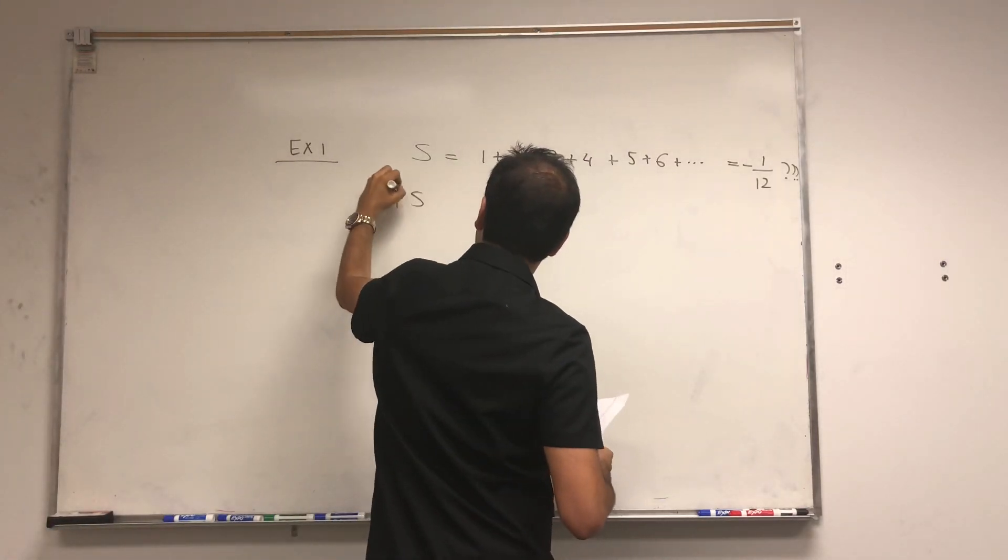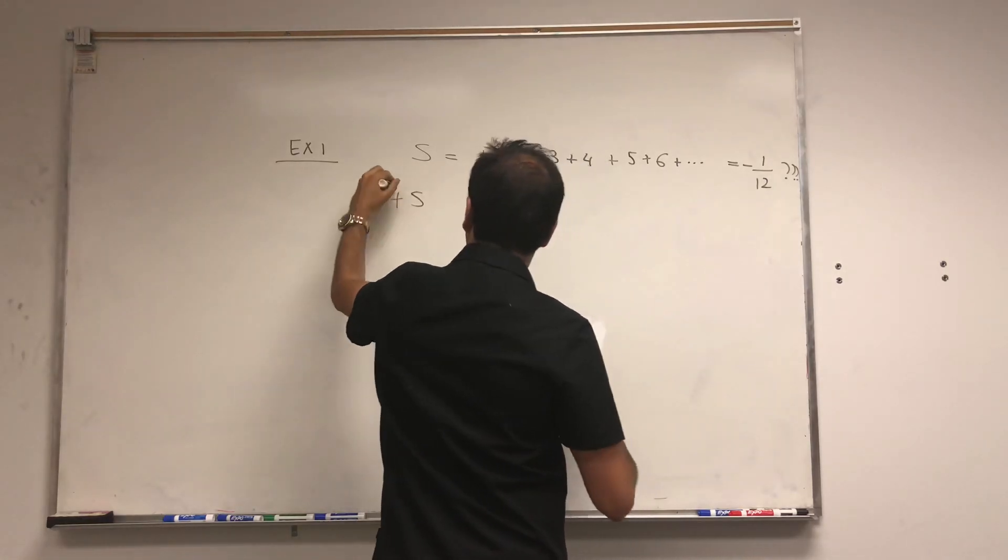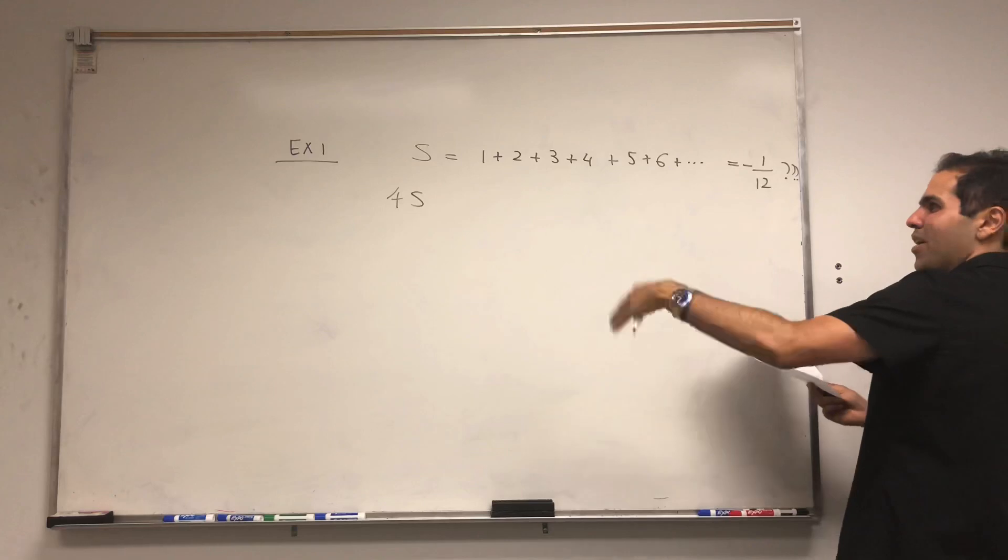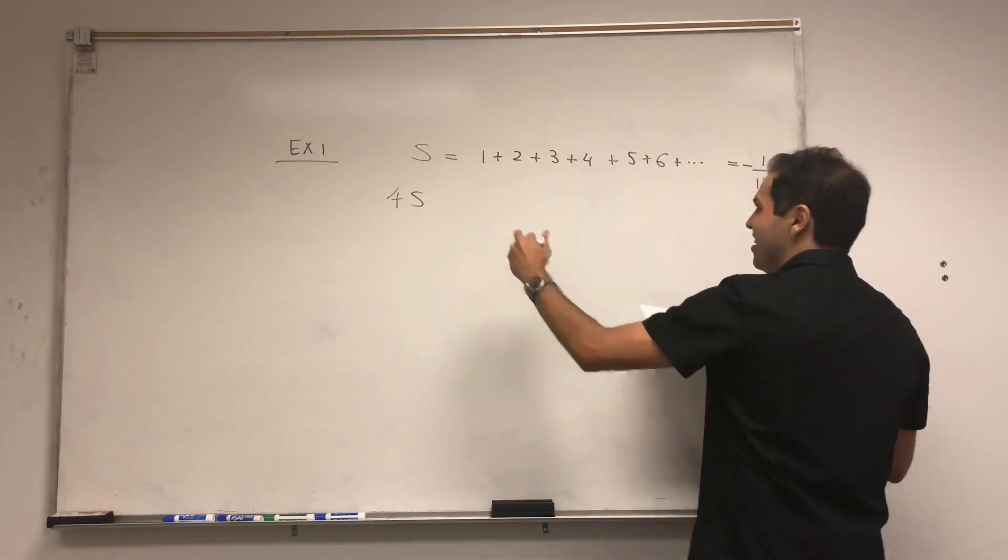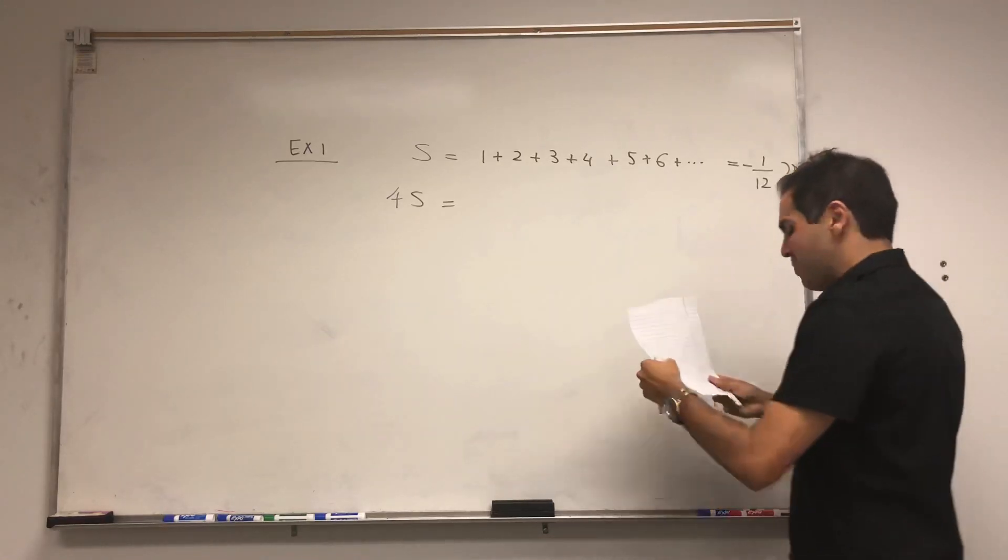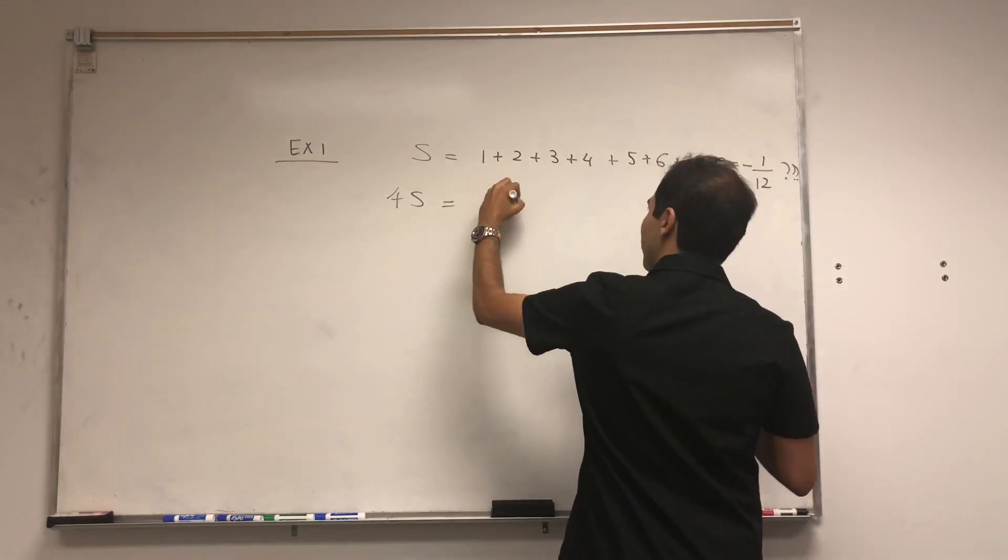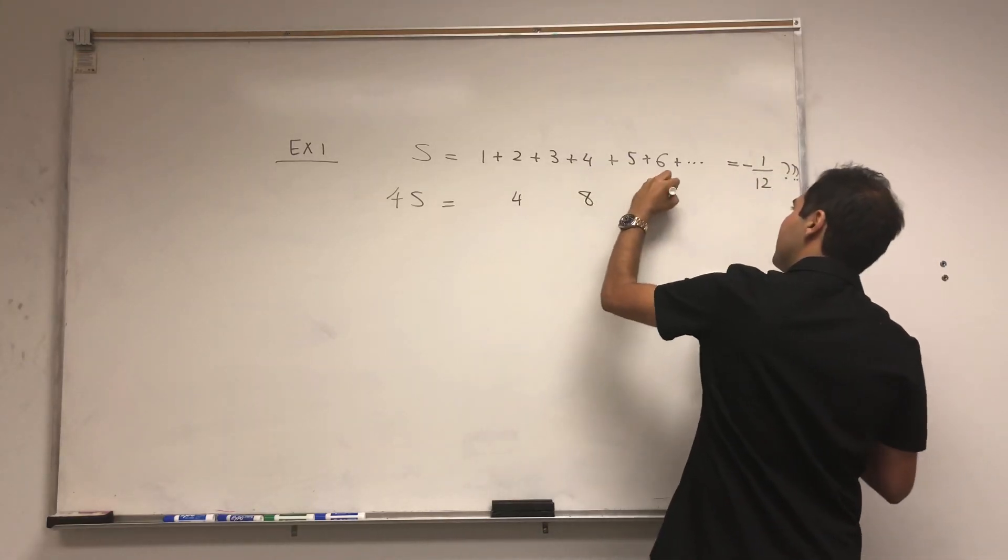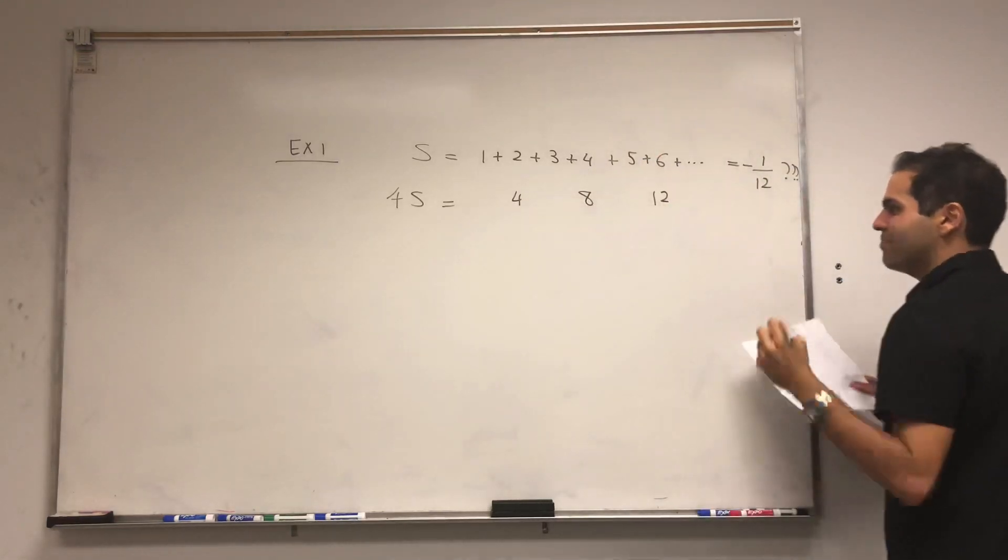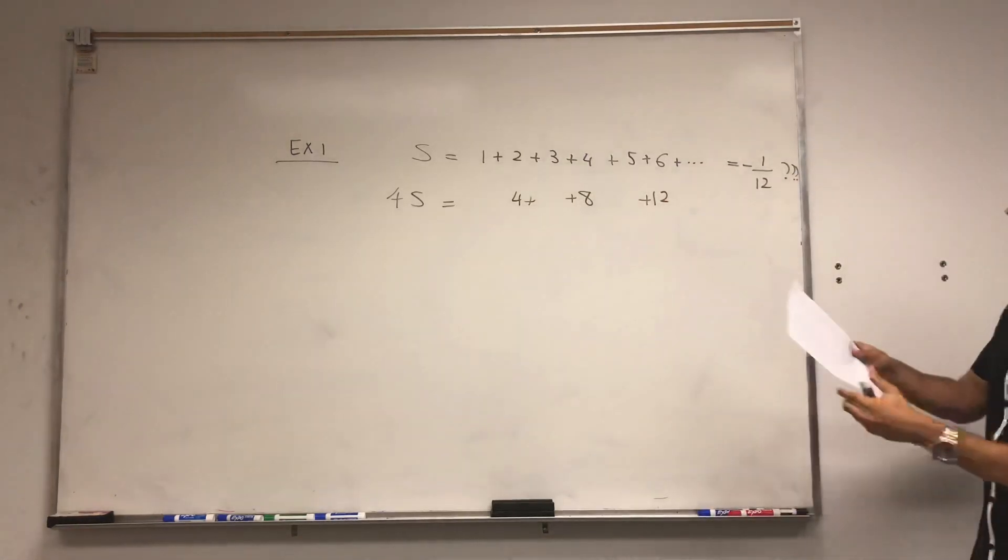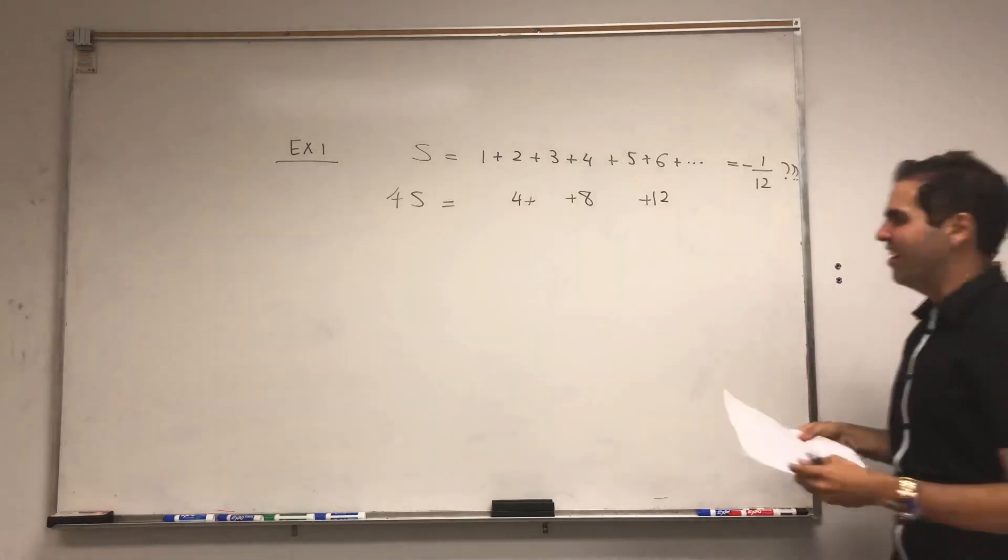Suppose you take this S and you multiply it by 4. Then of course you get 4 plus 8 plus 12 plus 16, etc. But let's take those numbers and put them in nice places. So the 4, let's put it here. The 8, let's put it here. The 12, let's put it here. So just put all those numbers in the even slots.